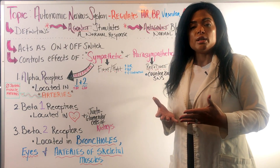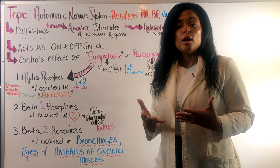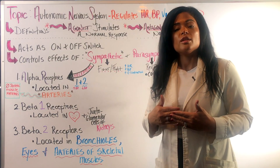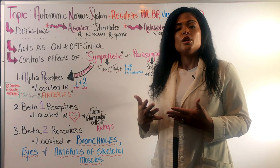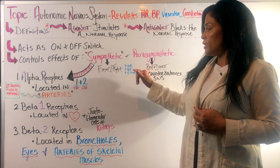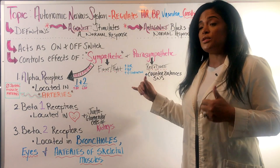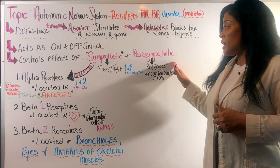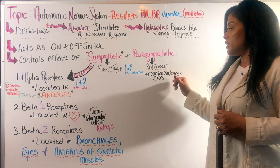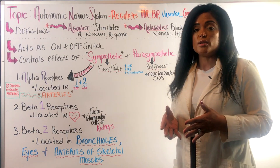You use the sympathetic nervous system every single day — when you're walking, running, when you wake up, jogging, walking your dog. It gives you the energy to function throughout the day, resulting in an elevated heart rate, slightly higher blood pressure, and increased contraction ability. The parasympathetic nervous system does the opposite — that's called the rest and digest. It counterbalances the sympathetic nervous system response.